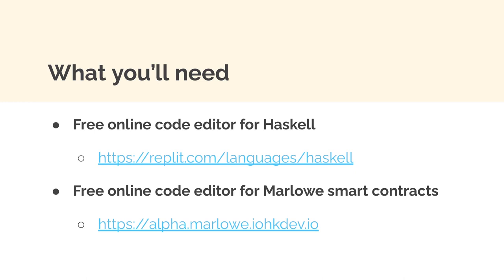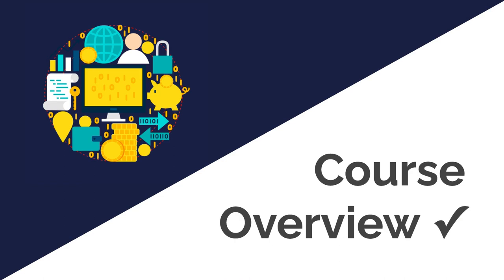To build smart contracts in Marlowe Haskell, we're going to use another free online code editor. Just go to alpha.marlowe.iohkdev.io. Here we can build smart contracts in a number of different languages and also test their implementation, so you can build and test your contracts without deploying them. You won't have to download or install anything — as long as you have internet access, you can take this course.